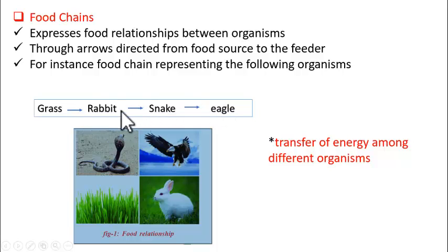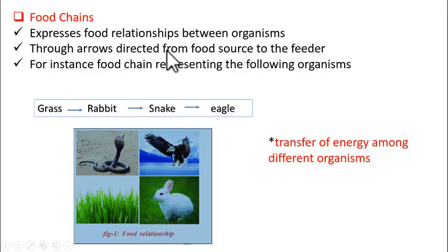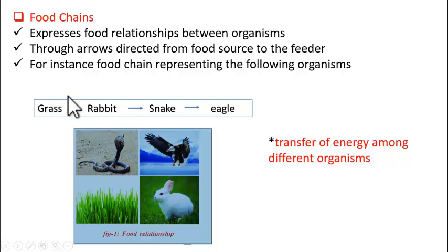In a food chain, the group of organisms are connected through arrows, and these arrows always direct from food source to feeder. For instance, if you take this group of organisms, we can represent the food chain as: grass is eaten by rabbit, rabbit is eaten by snake, and snake by eagle.